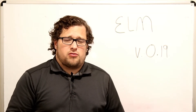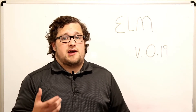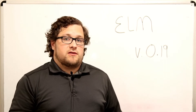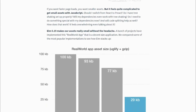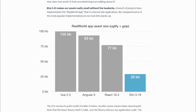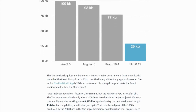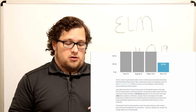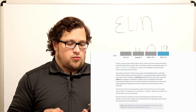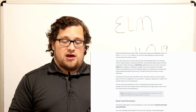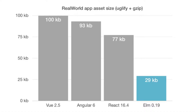Let's take a look at the blog post where they discuss how much smaller the `--optimize` flag actually makes things. Looking at the chart on screen, it is significantly smaller. Elm 0.19 makes assets really small without the headache. A bunch of projects implemented this real-world app — a decent-sized application — to compare popular implementations. Vue 2.5 took 100 kilobytes, Angular 6 took 93 kilobytes, React 16.4 took 77 kilobytes, and Elm 0.19 took just 29 kilobytes. That is amazing.